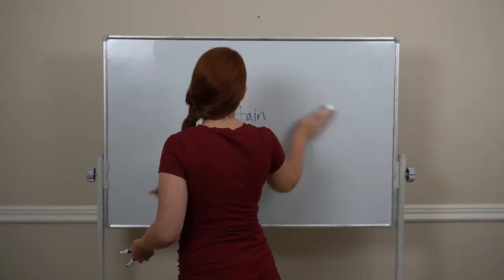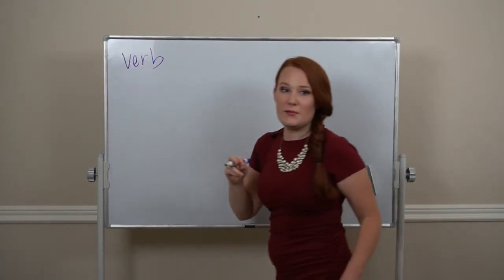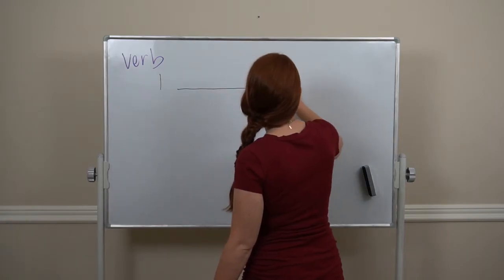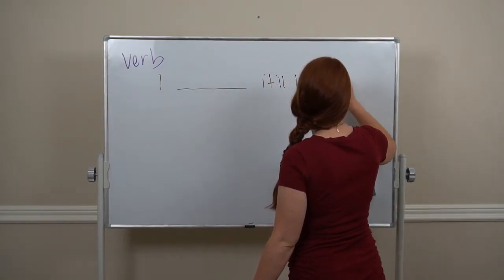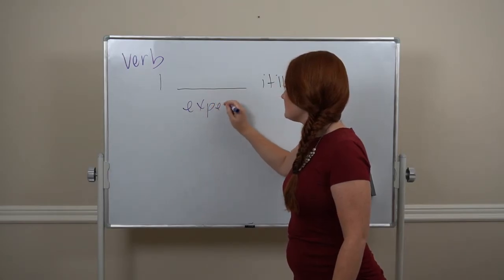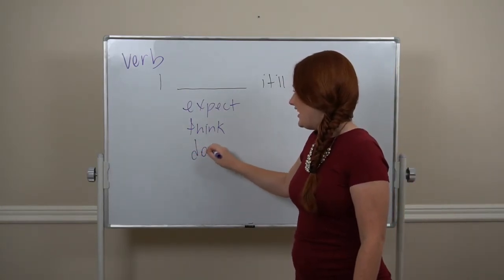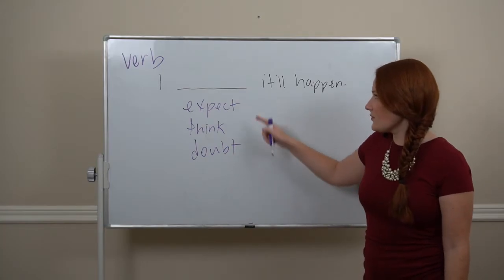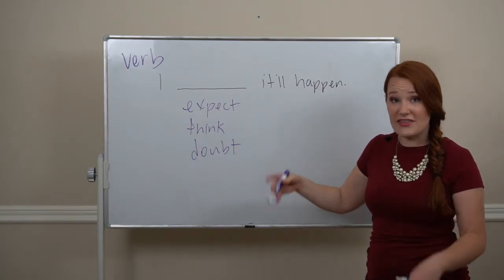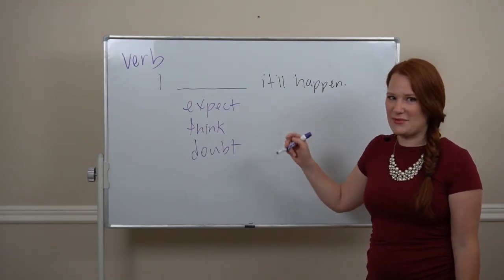For some verb forms. If we have a sentence, again, where I am the subject. So I blank, think it'll happen. I expect it'll happen. I think it'll happen. Or I doubt it'll happen. Expect, that's what I expect. Not confident, but I expect that. Same with think. Yeah, probably, I think it'll happen. Doubt means probably not. I doubt it'll happen. It probably won't happen.